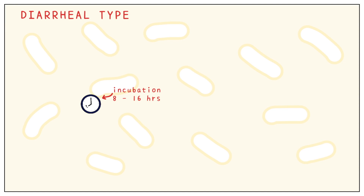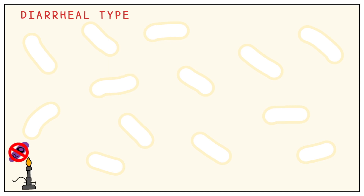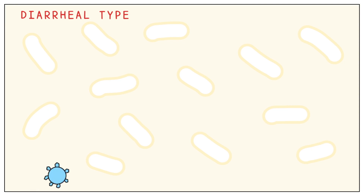The toxin is secreted in our intestines post-ingestion of infected foods. The toxin is heat-labile, meaning it cannot withstand high temperatures. The serotypes involved are 12 (2×6), 8, 9, and 10.